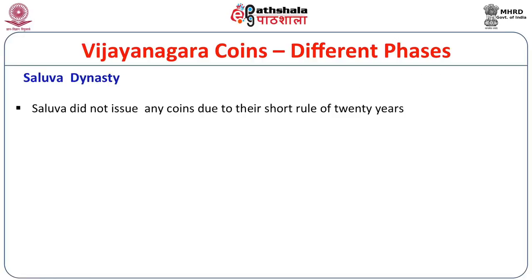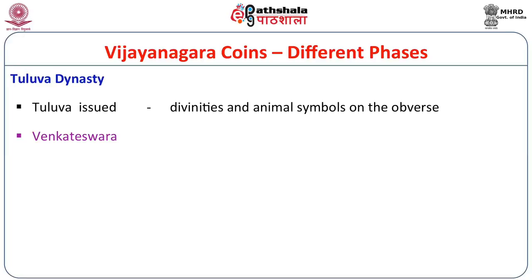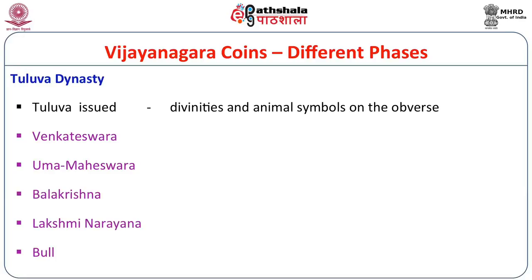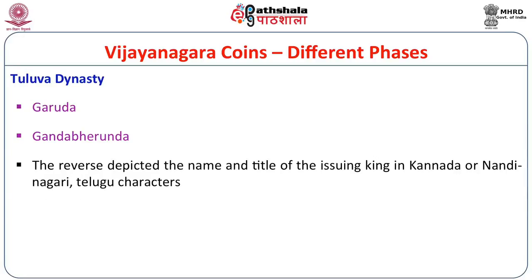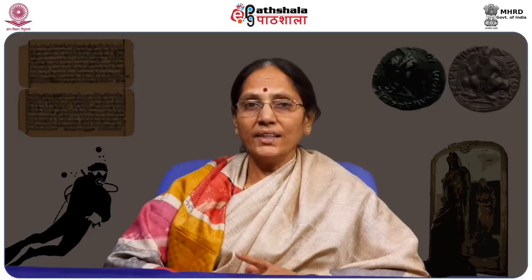The Salva dynasty did not issue any coins; no coins of the Salva dynasty have been found to date, making it impossible to trace their coinage. Coming to the Tulva dynasty, they issued coins with symbols on the upper side including Venkateshwara, Uma Maheshwara (old type), Balakrishna, Lakshmi Narayana, Bull, Garuda, and Gandaberunda. On the reverse side, similar to Sangama dynasty practice, they depicted the name and title of the issuing king in Kannada and Nandhinagari.